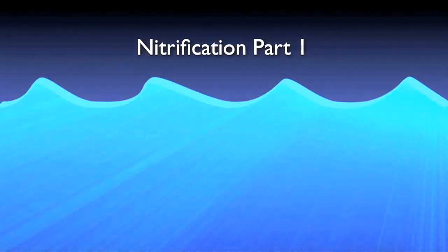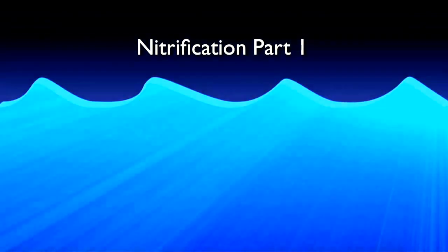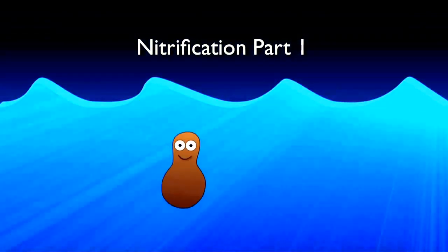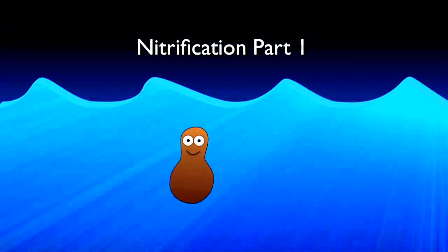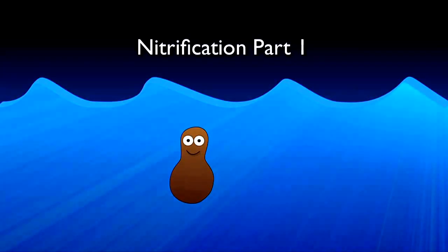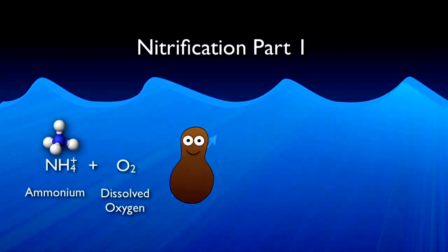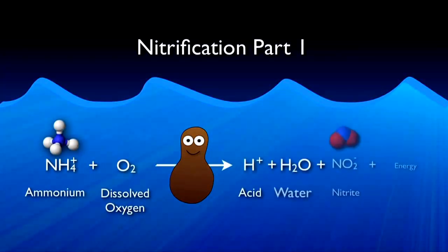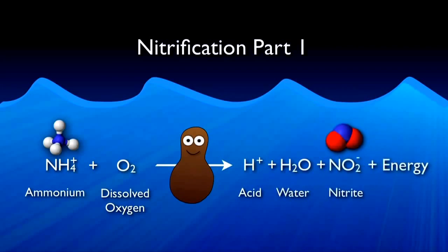Once a healthy population of nitrifiers has developed, the first step — performed largely by ammonia oxidizers — takes ammonium and dissolved oxygen and converts it into acid, water, nitrite, and energy. If the system lacks adequate alkalinity, the acid produced could create inhospitably acidic conditions for the bacteria, resulting in loss of nitrification. The water produced is absorbed in the system and the nitrite moves on to the next step.